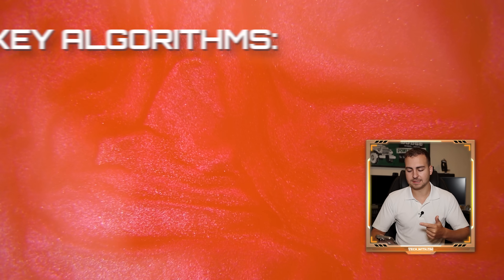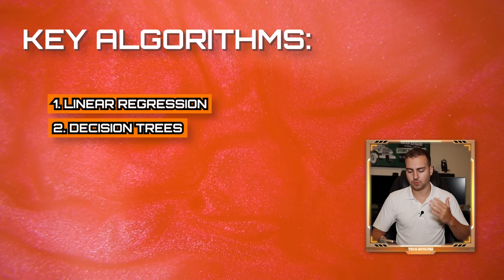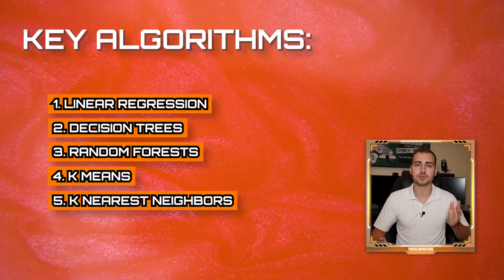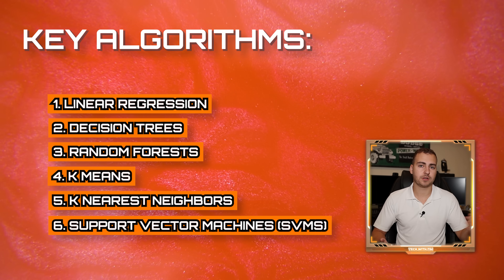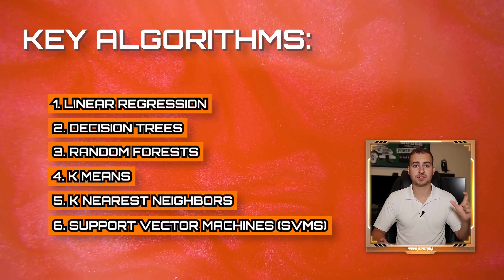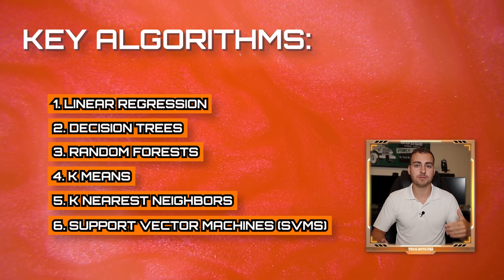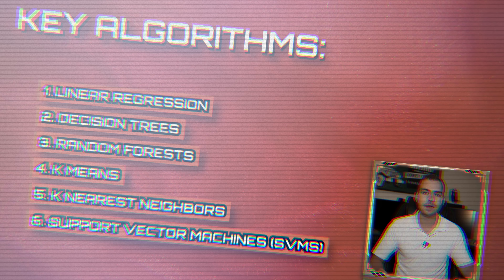I have a list of machine learning algorithms that I recommend you learn. Number one is linear regression, followed by decision trees, random forests, k-means, k-nearest neighbors, and support vector machines. There are a ton of other ones you can look at, but these are some of the more popular ones and they'll give you a good foundation in machine learning algorithms and how they actually work.